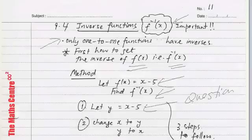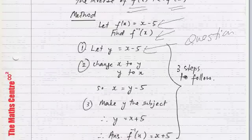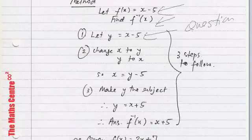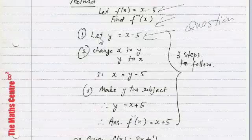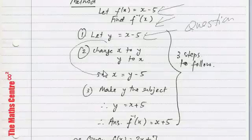And then what we will do is, we will change our y to x and our x to y. So where we see a y, we will change it to x and where we see an x, we will change it to a y. I have written it here for you. Change x to y and y to x. So it becomes, so this one becomes x equals to y minus 5.